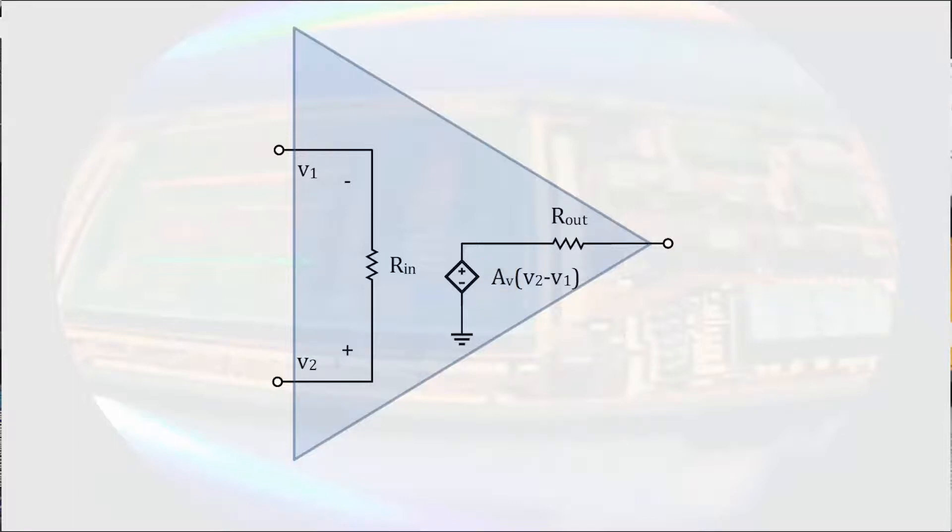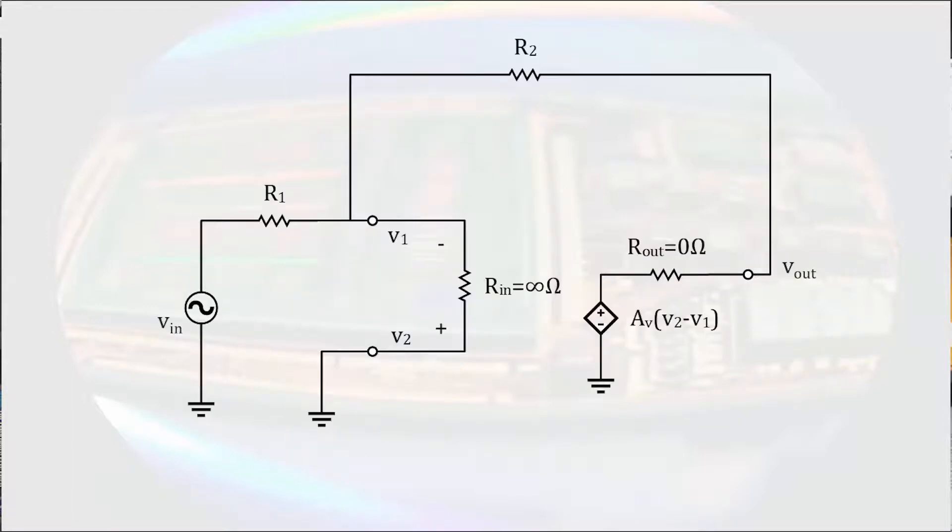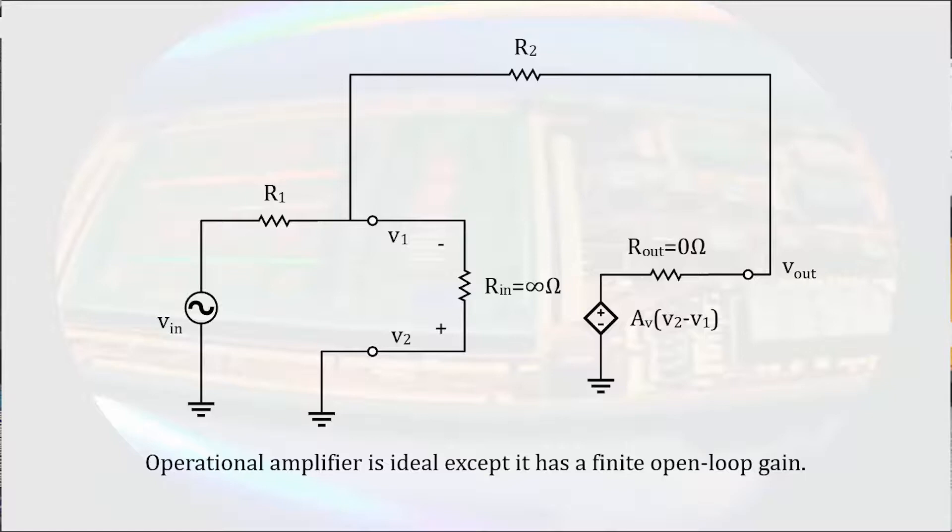In order to look at the frequency response, we are going to look at the open-loop gain of the amplifier. We are still assuming the input resistance is infinite and the output resistance is zero.